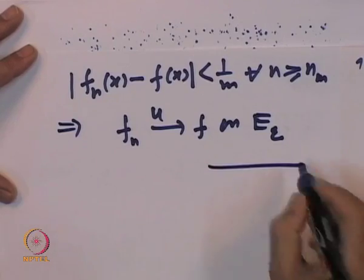This proves Egorov's theorem: if F_n converges to F almost everywhere, then given any set E of finite measure, we can find a subset E_epsilon of E such that F_n converges to F uniformly on E_epsilon and mu(E - E_epsilon) < epsilon. For every epsilon, we can find E_epsilon ⊂ E such that mu(E - E_epsilon) < epsilon and F_n converges to F uniformly on E_epsilon.